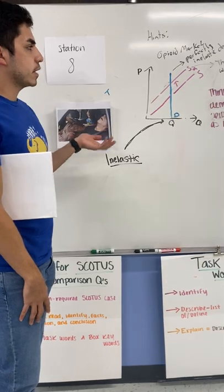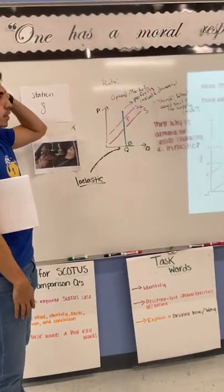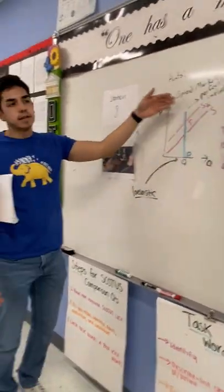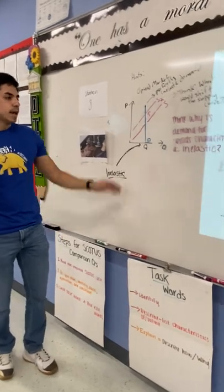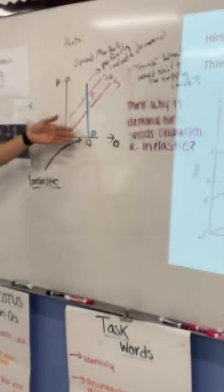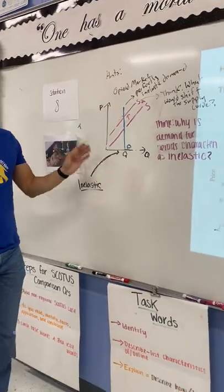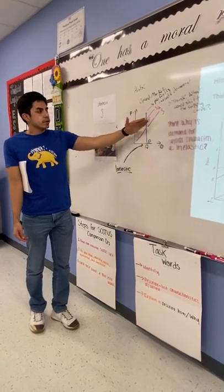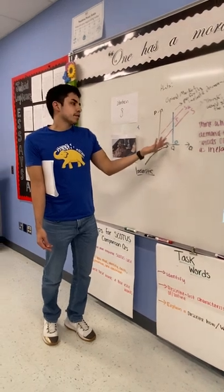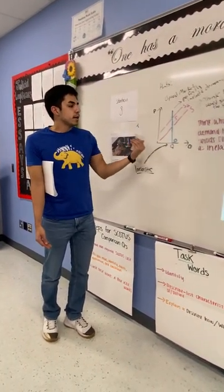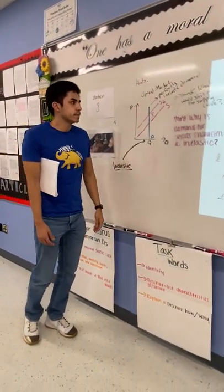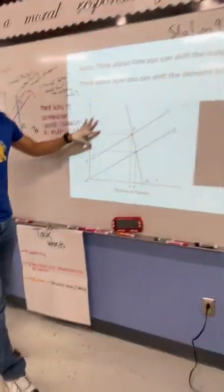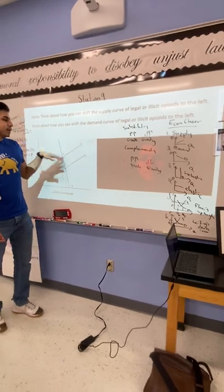At Station 8, I invited you to think about why supply-side solutions to the opioid epidemic might not be the biggest bang for your buck. I drew a perfectly inelastic demand curve — this is a case where we study extremes to understand the range of possibilities between them. With a perfectly inelastic demand curve, a leftward shift of the supply curve wouldn't change quantity in the market. So if we're addressing the opioid epidemic with supply-side solutions, we would expect equilibrium quantity to fall, but not by much if demand is highly inelastic. At Station 9, I invited you to shift supply and demand curves and come up with policies to solve the opioid epidemic.